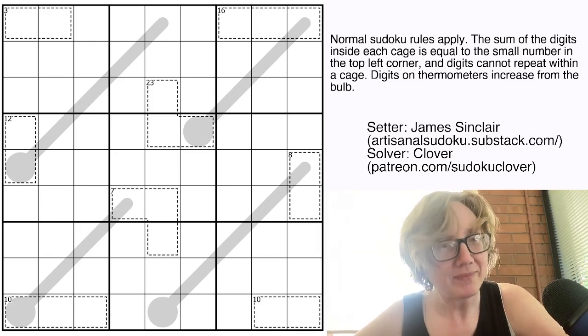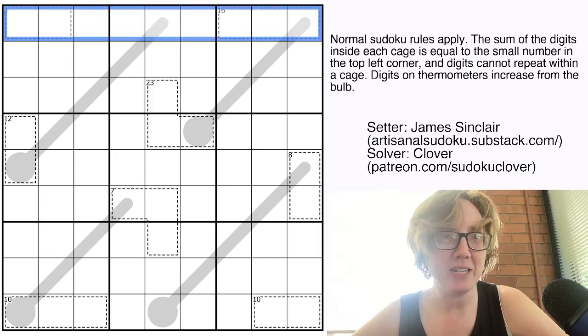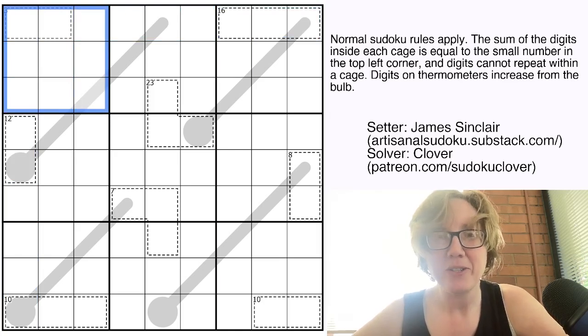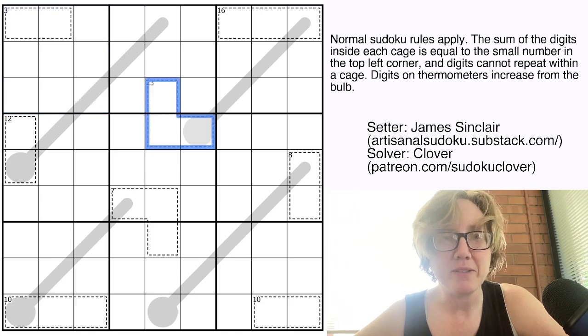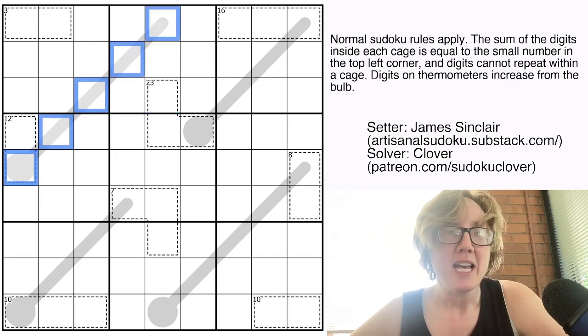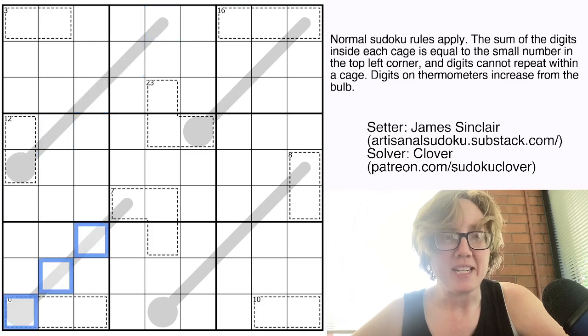So normal Sudoku rules apply. So we're placing the digits one through nine once each in each row, each column and each outlined three by three region. And then we also have two variants here. We have killer Sudoku, meaning that we have some cages in the grid and digits cannot repeat in cages. And in each cage, the digits have to sum to the small number in the top left corner. And then we also have thermometers. And digits along a thermometer have to increase starting at the round bulb end and going along the thermometer. And they don't necessarily have to increase consecutively, they just have to get bigger at every step.